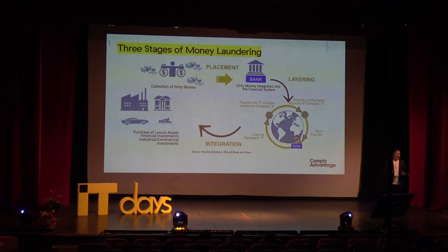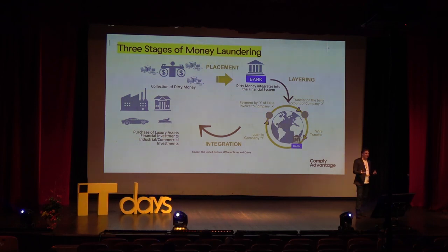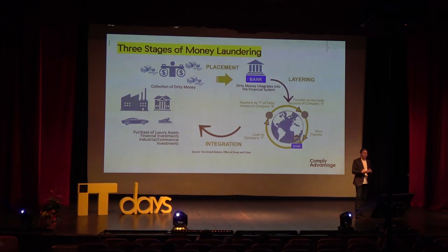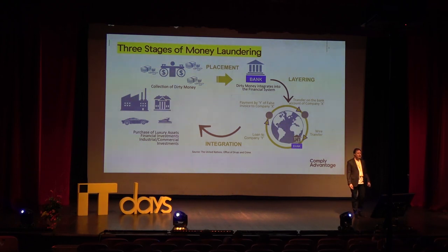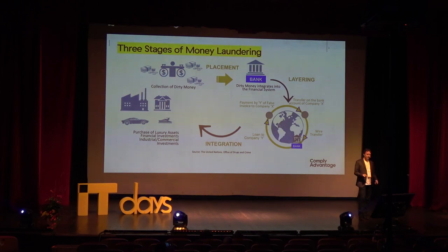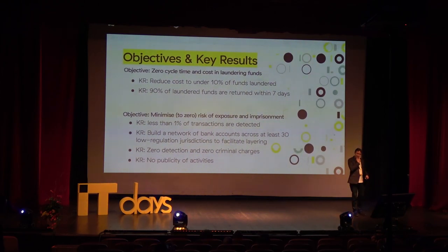Once we've layered the money and made it very difficult to trace back to the source, there's one final stage: integration. Integration is the fun bit — it's where we get to use our funds. We've made it untraceable from the original source, and now we can enjoy our wealth. We might purchase luxury goods, pieces of art, jewelry, a Ferrari, or property.